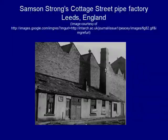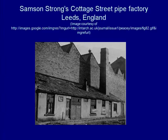Here is an example of the early Industrial Revolution: Samson Strong's Cottage Street Pipe Factory in Leeds, England. We can see that the early factories were not beautiful by any stretch — very few windows, most likely very hot and cramped and very uncomfortable for workers. This is the kind of conditions that early workers labored under.